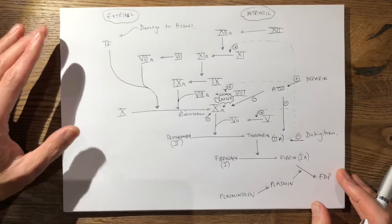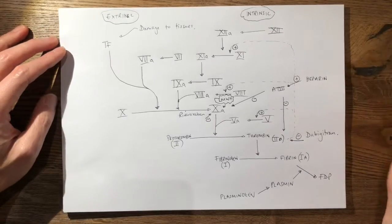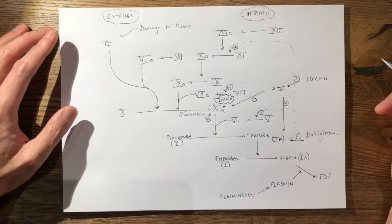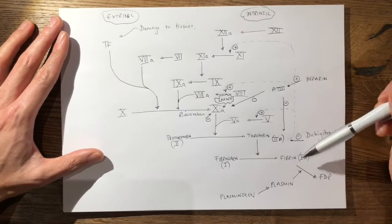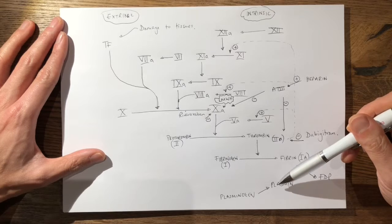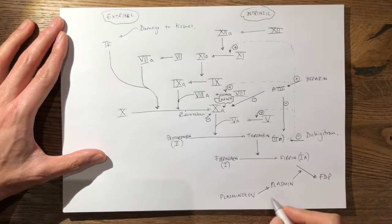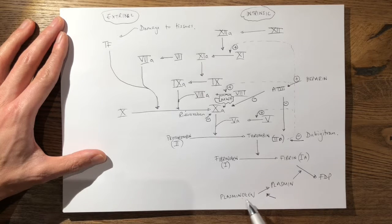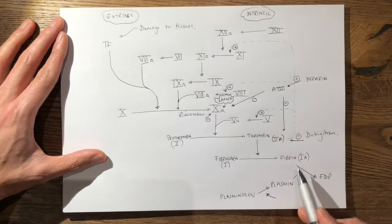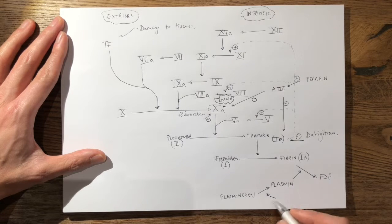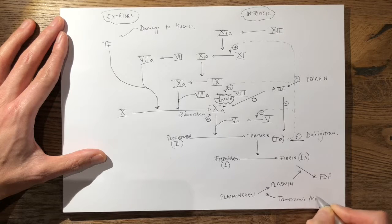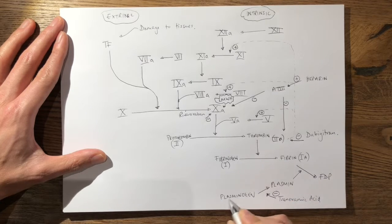Tranexamic acid, which is used in major trauma — you probably know about the multicenter CRASH-2 trial — is an antifibrinolytic. Fibrinolysis occurs by plasmin, which comes from plasminogen. Tranexamic acid inhibits the conversion of plasminogen to plasmin, so you do not get fibrin degradation products and you do not get fibrinolysis. Therefore you have more integrity to your fibrin clot. Tranexamic acid works by inhibiting the conversion of plasminogen to plasmin.